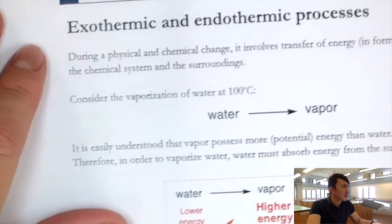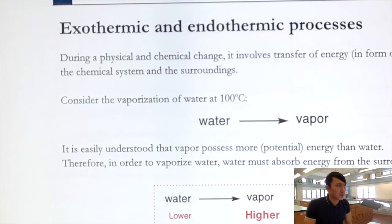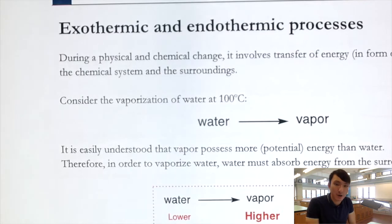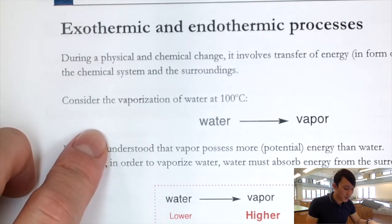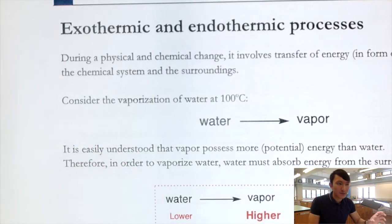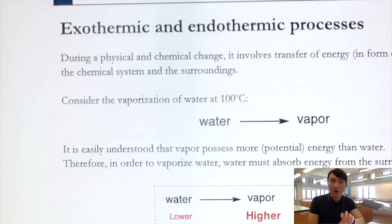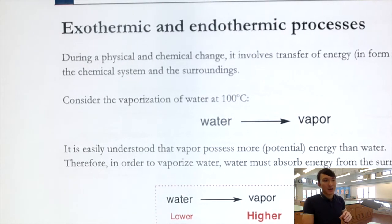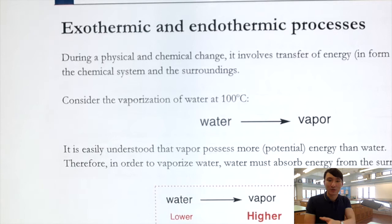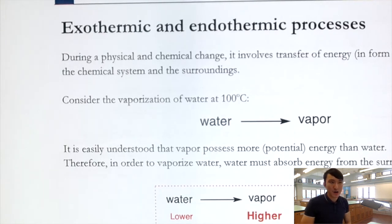Now, exothermic and endothermic processes — we did talk about this in Form 3 chemistry. When it comes to energy change or heat change, there are only two possible outcomes: either the system transfers heat to the surrounding, or the system absorbs heat from the surrounding. It is just like you are either paying money to others or getting paid by others.